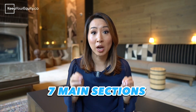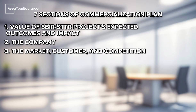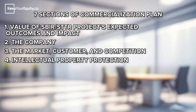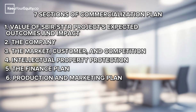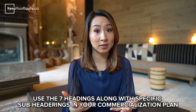There are seven main sections of the commercialization plan: one, the value of the SBIR or STTR project, expected outcomes and impact; two, the company; three, the market, customer and competition; four, intellectual property protection; five, the finance plan; six, production and marketing plan; and seven, the revenue stream. These seven categories are the exact main headings you'll use. I strongly recommend breaking down each section further using subheadings to organize the draft and help SBIR reviewers.